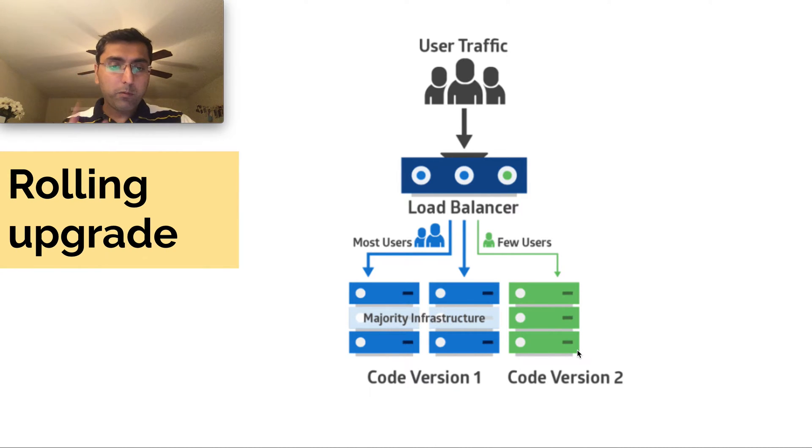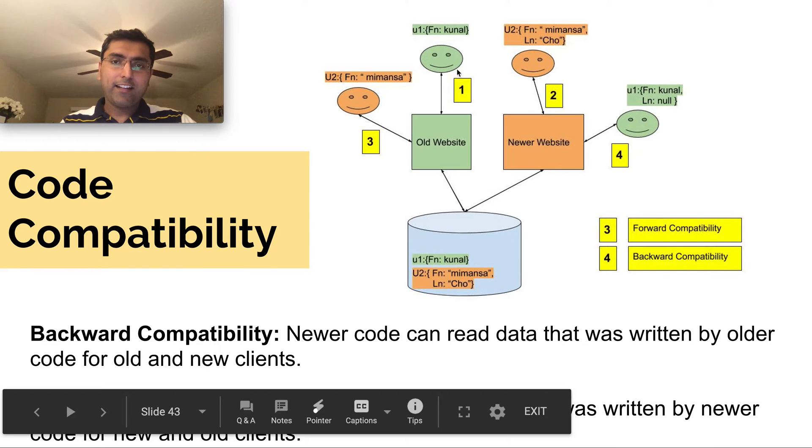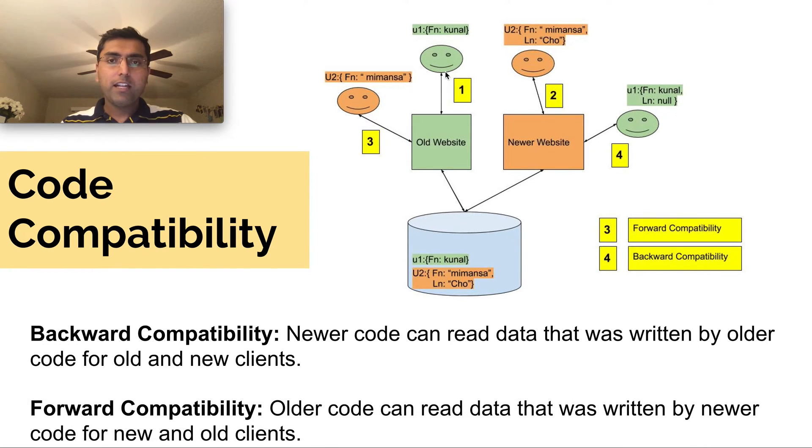And for that we need to understand what is backward compatibility and what is forward compatibility so that all kinds of users using old services, old websites, also work with new web services with new websites. So let's take an example because this can get complex. Let's take this step one. Let's say this is the green user. And he's trying to type in a form which just supports one field, first name. And that old website takes in the first name from this user and then writes it to the database.